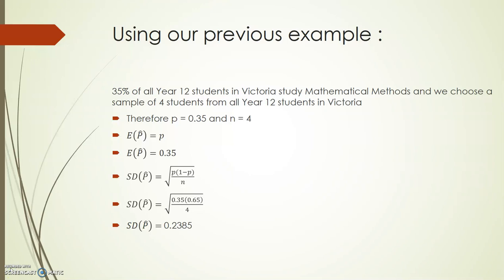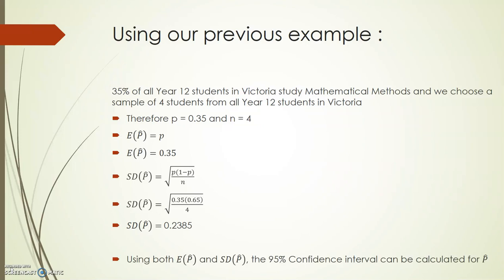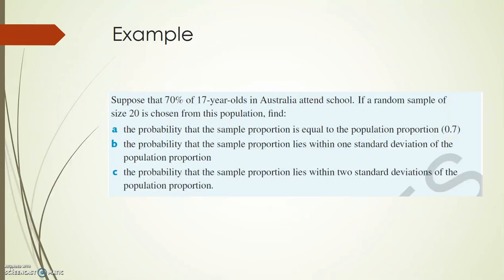Finding the expected value of p-hat and the standard deviation of p-hat when the population is large is quite a simple process. Remember that the expected value of p-hat and the standard deviation of p-hat — mu and sigma — can be used to find the 95% confidence interval for p-hat. Let's look at a full example now. We're told that 70% of 17-year-olds in Australia attend school. If a random sample of size 20 is chosen from the population, we need to find: the probability that the sample proportion equals the population proportion; the probability that the sample proportion lies within one standard deviation of the population proportion; and the probability that it lies within two standard deviations.